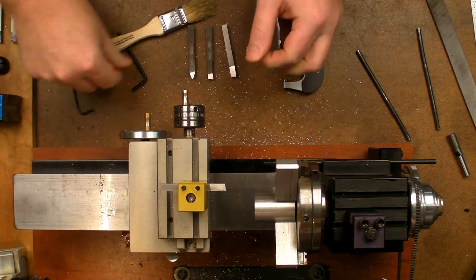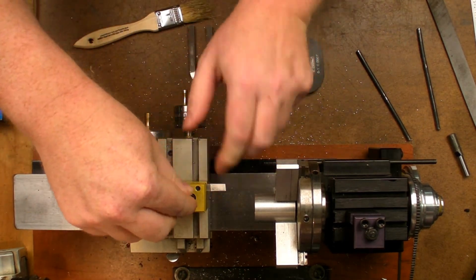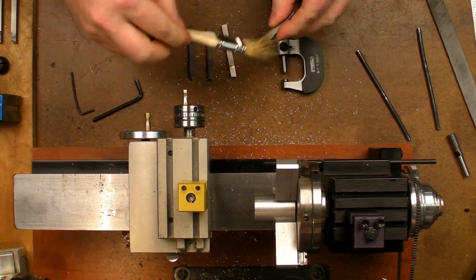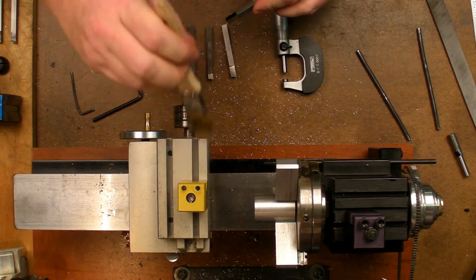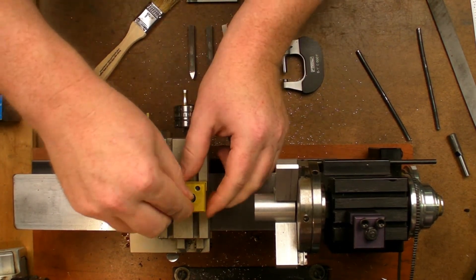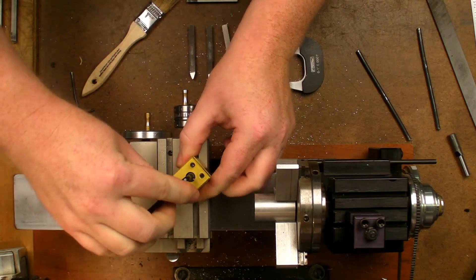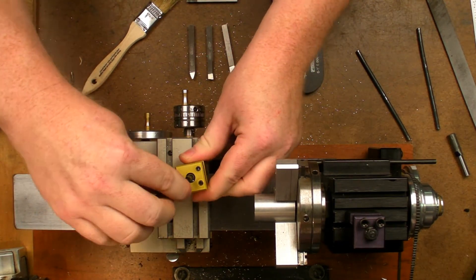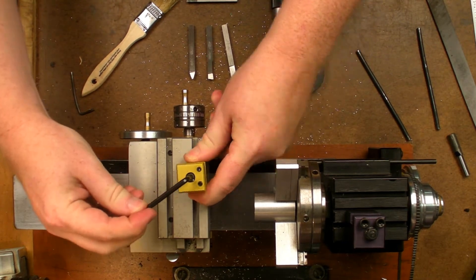So next we'll do a turning operation. And for that we need to change the tool post setup. With the Teg, the tool post is just one bolt, or in this case a socket head cap screw, and you can orient the tool post any which way you like.